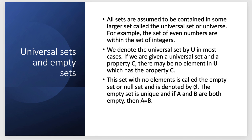All sets are assumed to be contained in some larger set called the universal set or universe. For example, the set of even numbers are within the set of integers. We denote the universal set by U in most cases. If we are given a universal set and a property C, there may be no element in U which has the property C.